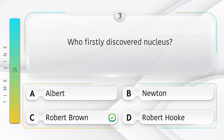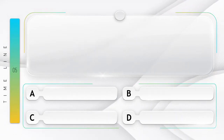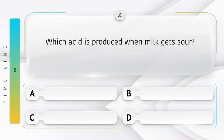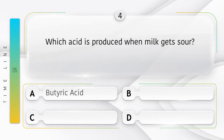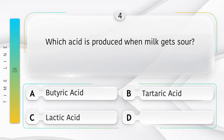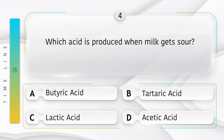Who firstly discovered the nucleus? Options: A) Albert, B) Newton, C) Robert Brown, D) Robert Hooke. The answer is option C, Robert Brown. Which acid is produced when milk gets sour? Options: A) Deuteric acid, B) Tartaric acid, C) Lactic acid, D) Acetic acid.